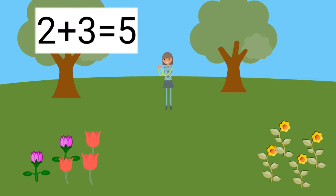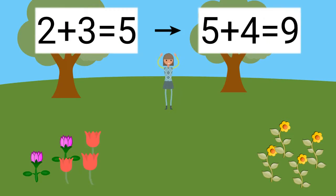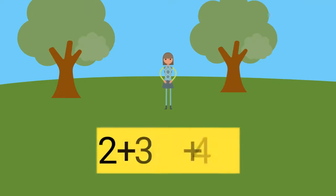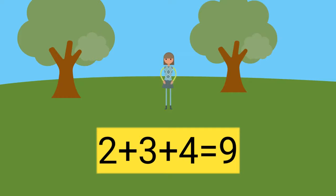First, we added 2 plus 3 to get 5. Next, we added 5 plus 4 to get 9. Now you know 2 plus 3 plus 4 equals 9. You are a fast learner.